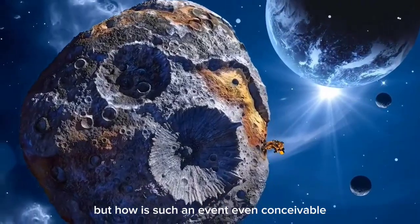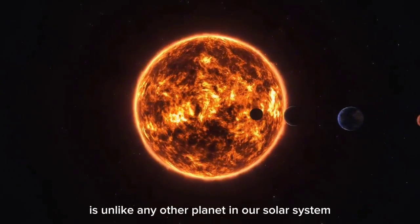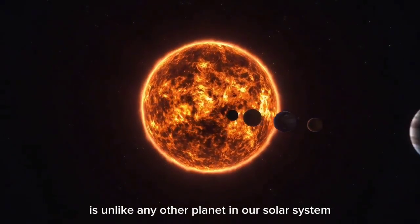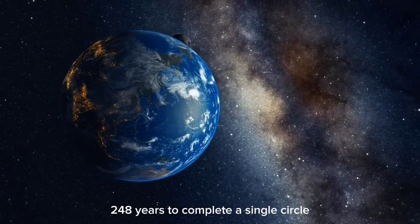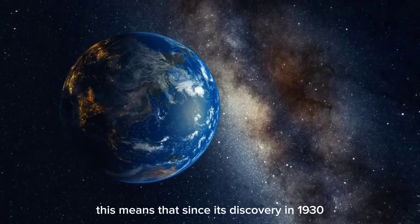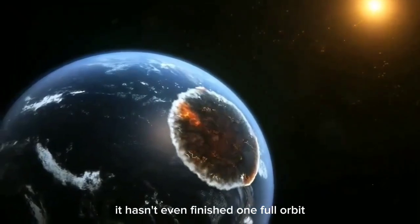But how is such an event even conceivable? Pluto's excursion around the Sun is unlike any other planet in our solar system. It requires a stunning 248 years to complete a single circle. This means that since its discovery in 1930, it hasn't even finished one full orbit.